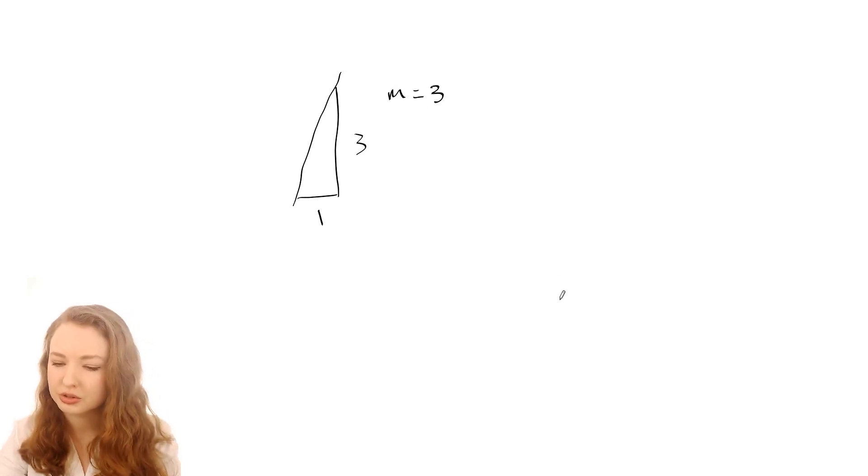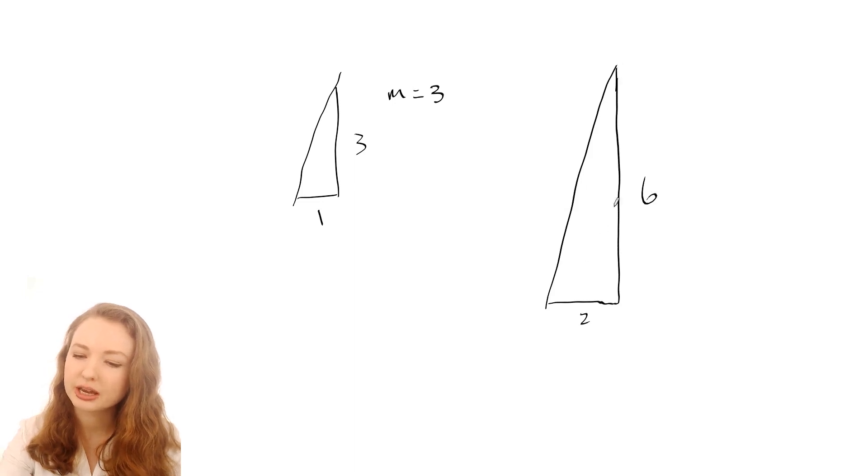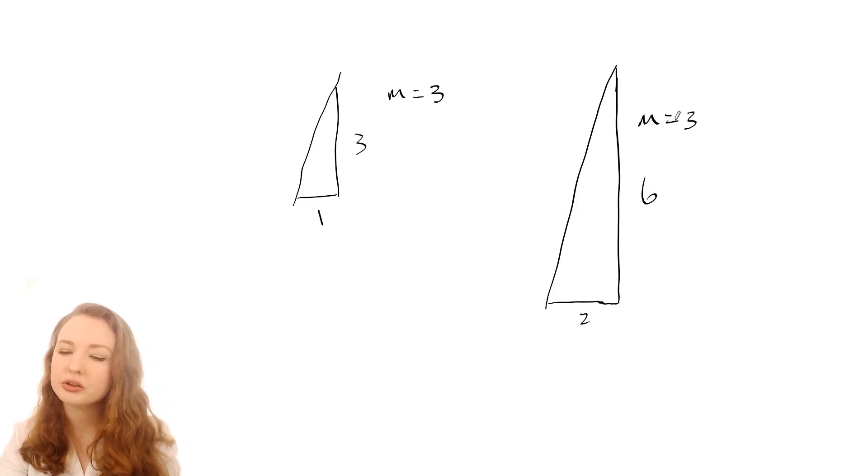If I go across two units and up six units, that triangle is just a scaled-up version of this triangle, so this one actually has the same slope. You can work that out from dividing the rise, which is how much it goes up, by the run, which is how much it goes across. So six divided by two makes three.